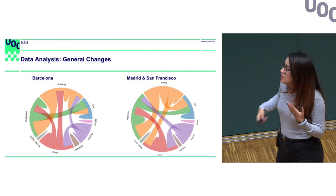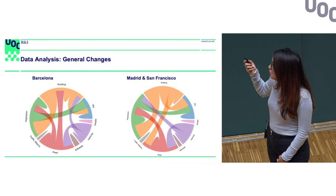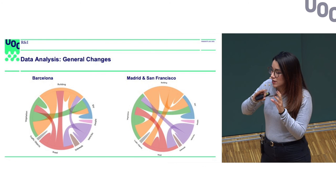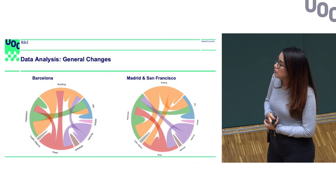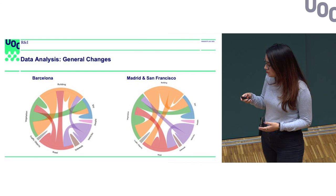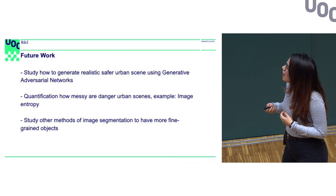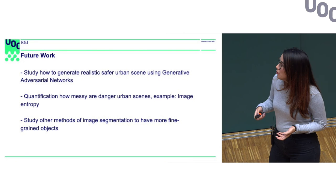In general, we are studying how safe and dangerous urban scenes differ. Overall, safer urban scenes tend to have more vegetation and more visibility of the sky. For Barcelona specifically, pedestrian safety correlates with narrow roads, while for Madrid and San Francisco it correlates with wide roads. We currently have a lot of future work ahead, and we are preparing this project to provide actionable urban interventions for making a city safer. Thank you so much for your attention — if you have questions, you can reach me later.